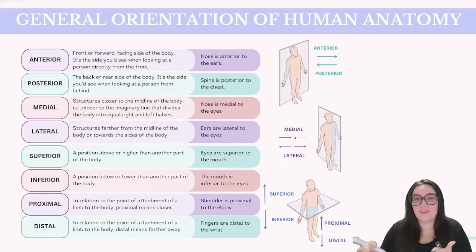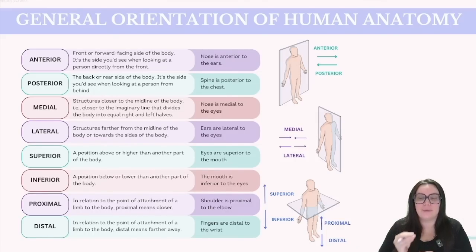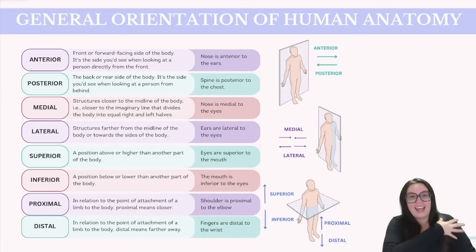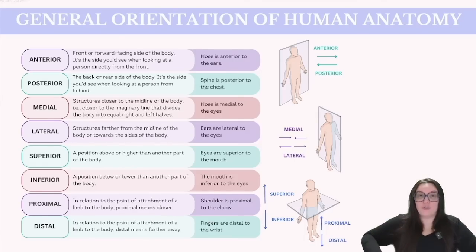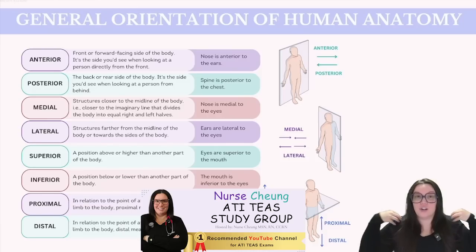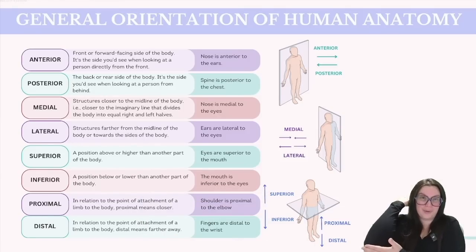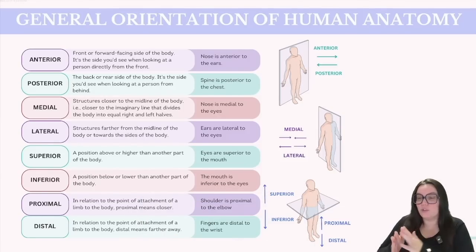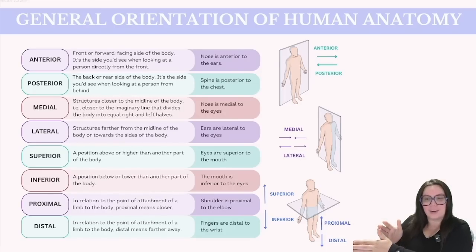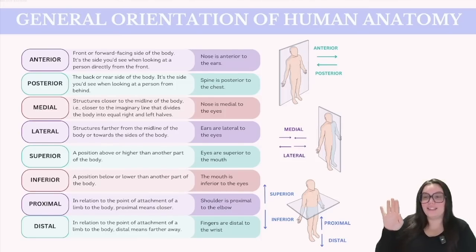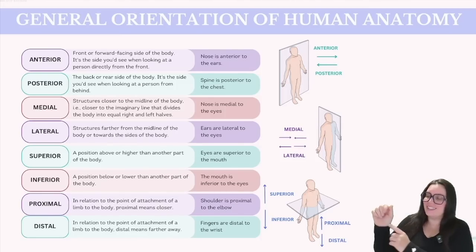Lastly, we have proximal versus distal. Proximal refers to the point of attachment of the limb to the body — proximal means closer. So anything that attaches to the central portion of our body, whether it's our femur or our humerus in our arms, is going to be more proximal because it's directly attaching to the body. We could say the shoulder is proximal to our elbow. Distal refers to things being further away from the body — not directly at the attachment point. So we could say that the fingers are distal to our wrists.